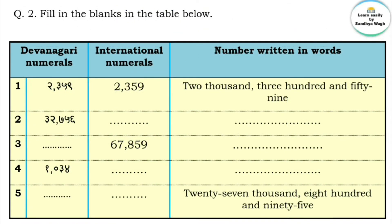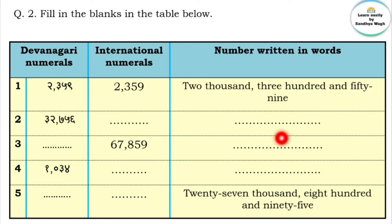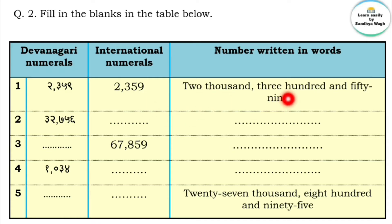Question 2: Fill in the blanks in the table below. This table has three columns: Devanagari Numerals, International Numerals, and Words. For example, the number 2359 — in Devanagari numerals it is 2359, in international numerals it is 2359, and in words it is two thousand three hundred and fifty-nine.